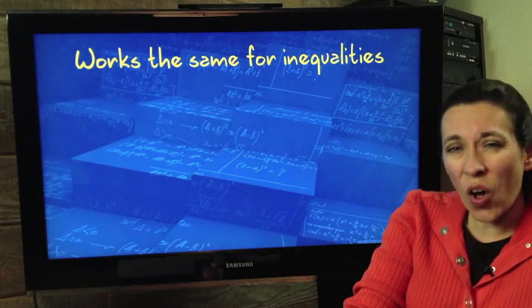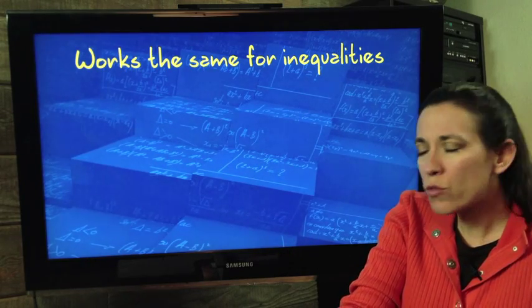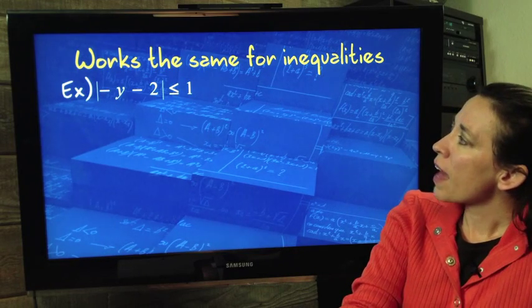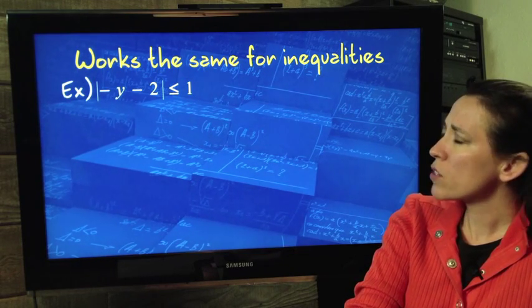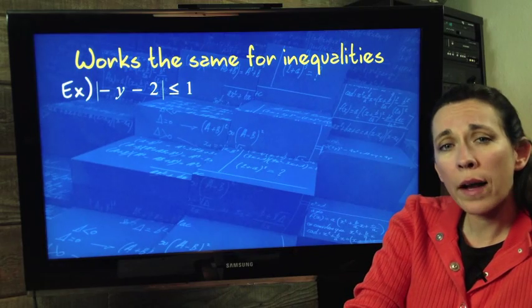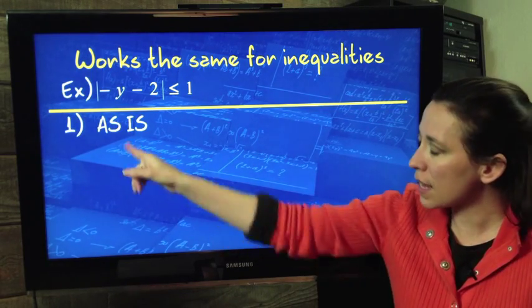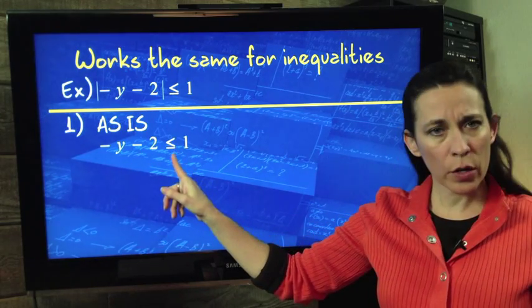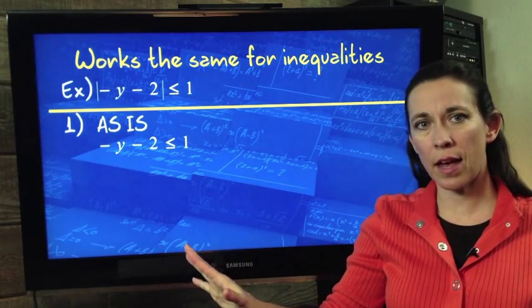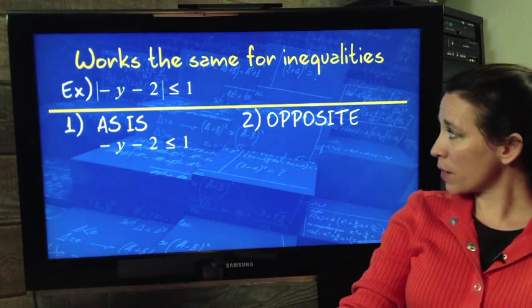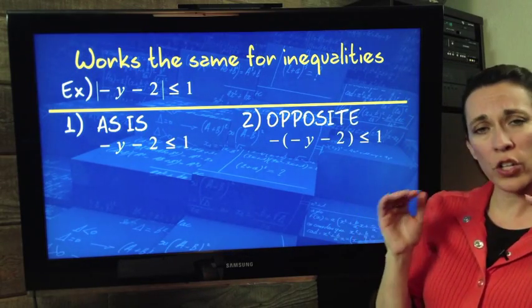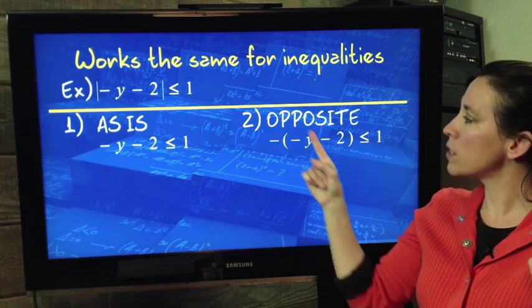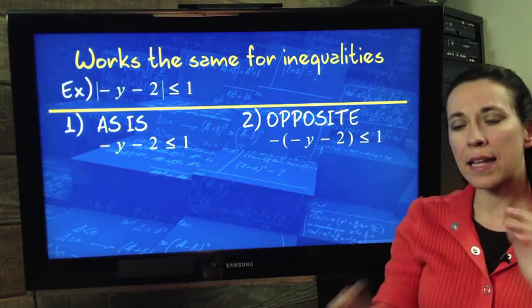The nice thing is, it also works with inequalities. You don't have to learn a different method. So consider this. Absolute value of negative y minus 2 less than or equal to 1. Set up your two possible solutions. The inside as is. Negative y minus 2 less than or equal to 1. I haven't changed anything yet. Second possibility, you've got to look at your opposite of the inside. So we're going to distribute a negative 1 to everybody that was inside that absolute value.